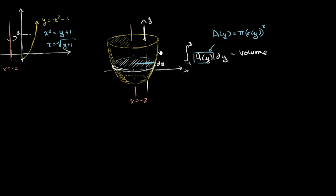And then you get x equals the square root of y plus 1. So we can write this as x, or f of y, equals the square root of y plus 1.